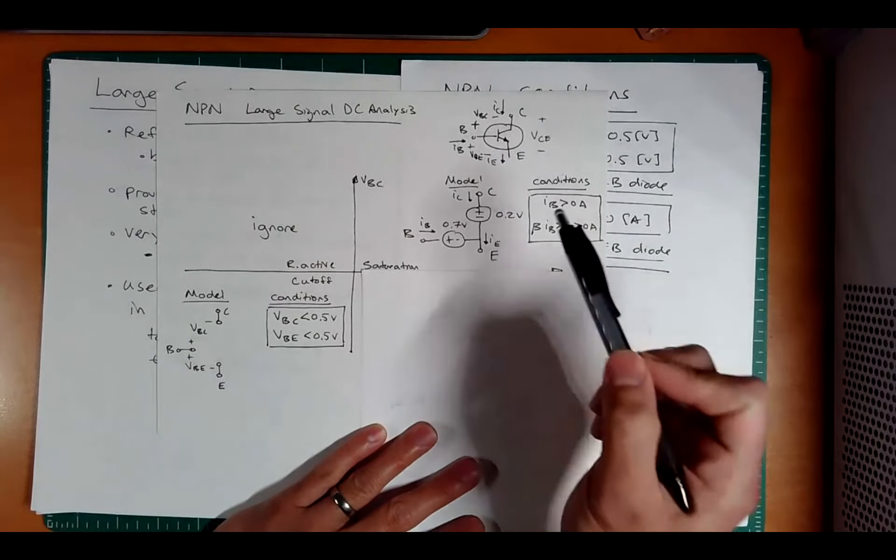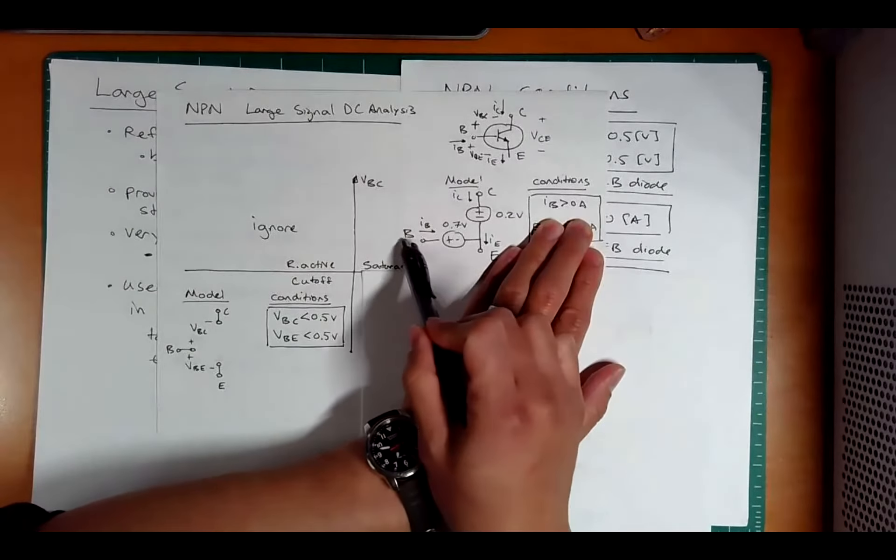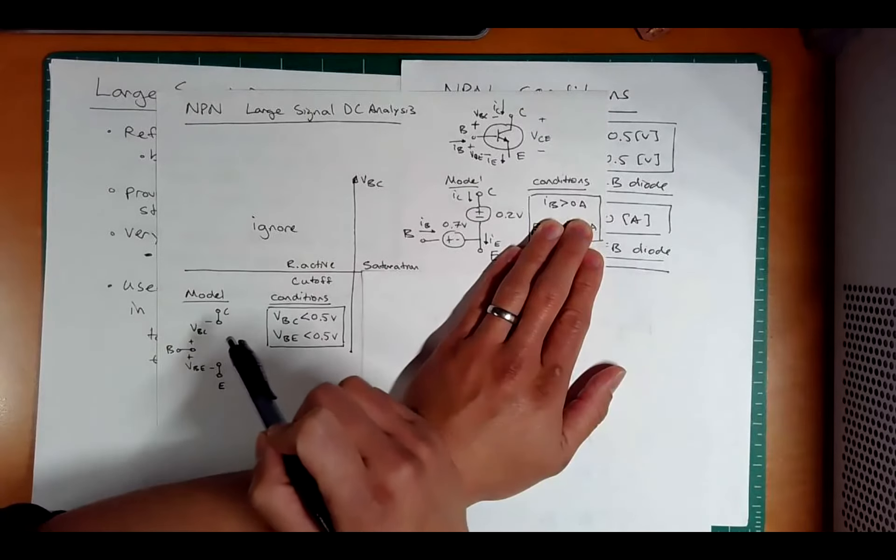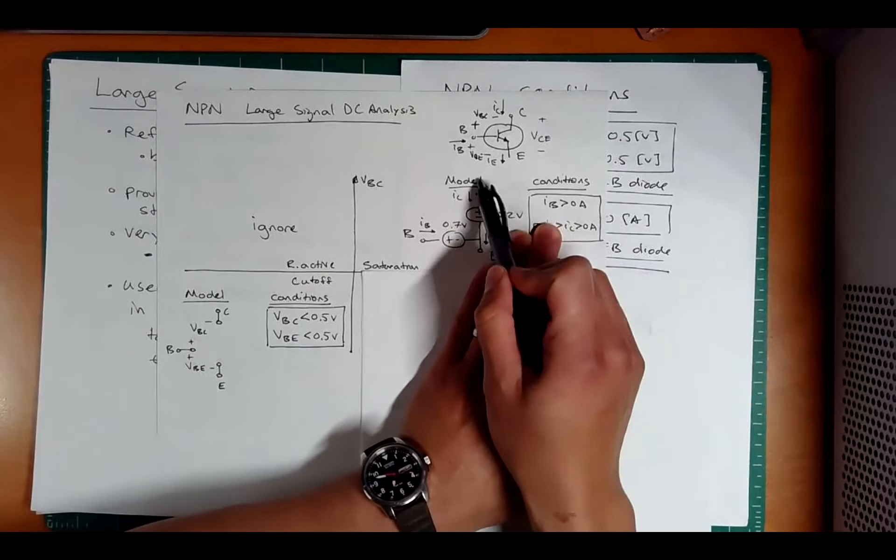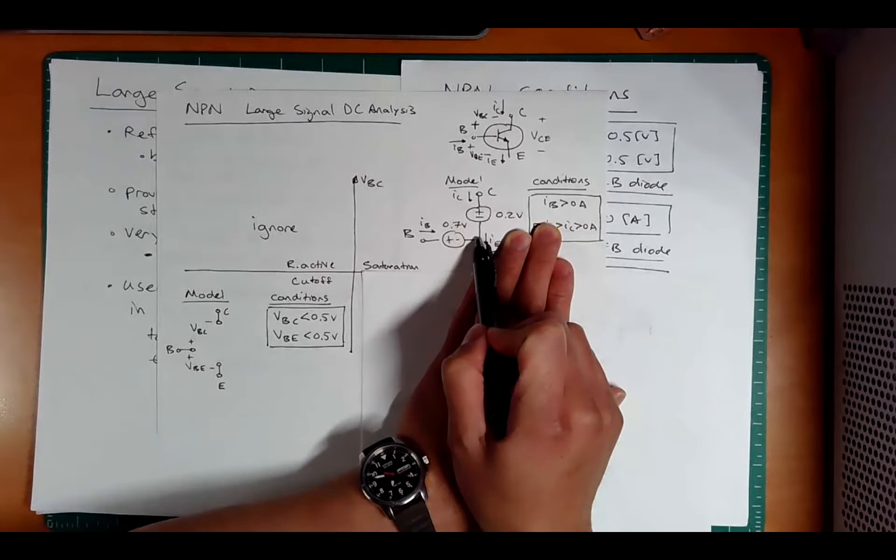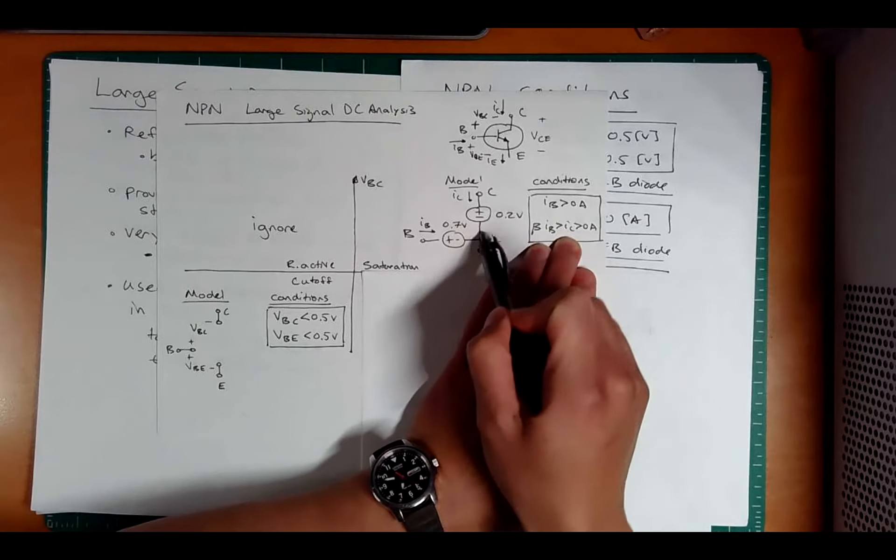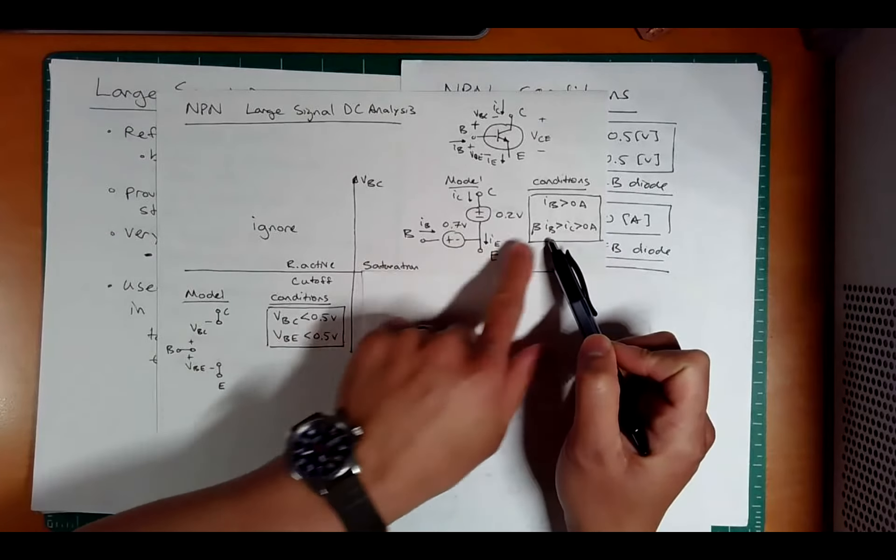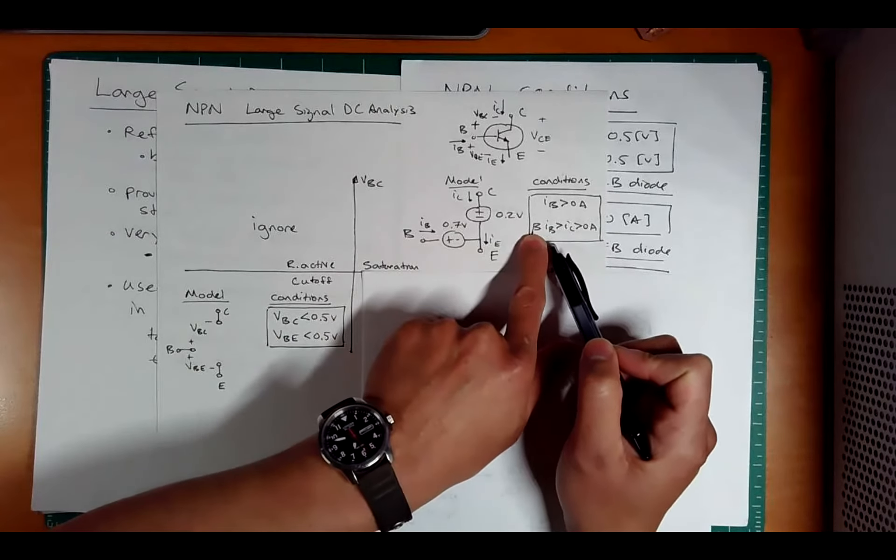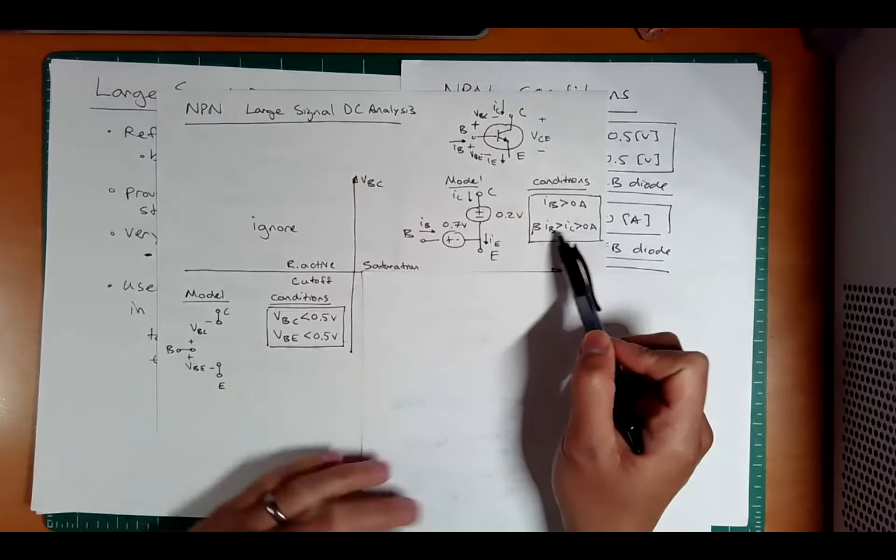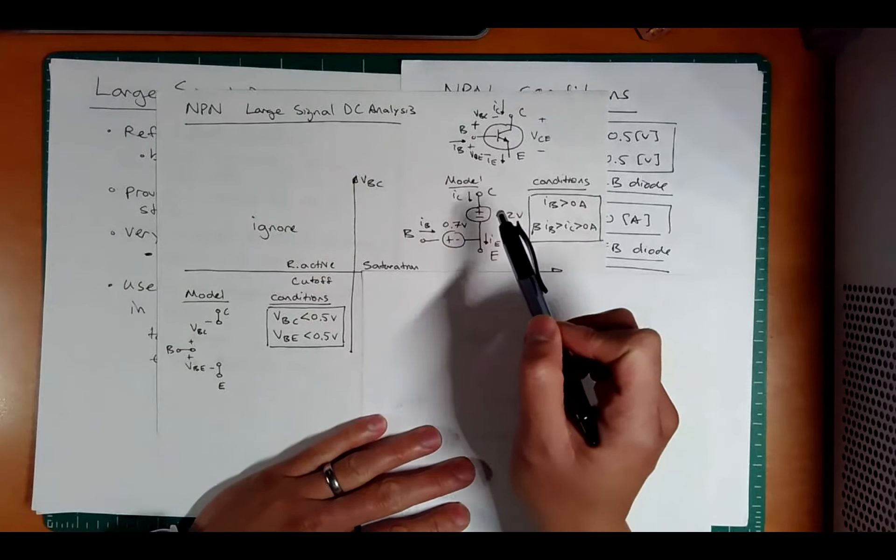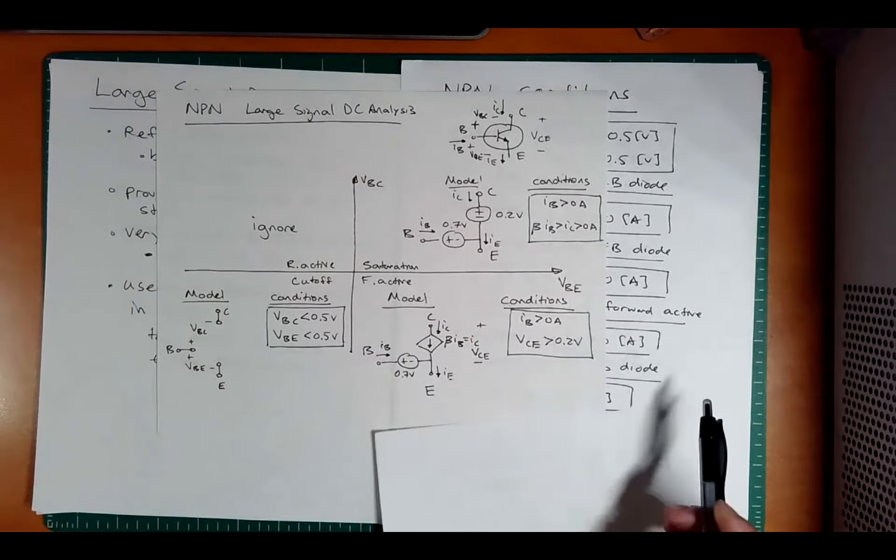If you're going to guess that it's in saturation, you would replace it with this model. And then you would have to check, is the current going through here positive, just like a forward bias diode? And is IC positive? And not only is it positive, is IC less than what IB times the forward active gain would be? This condition distinguishes it between saturation and forward active.